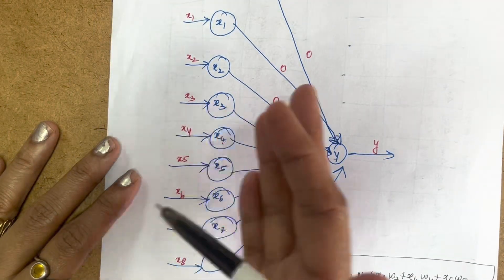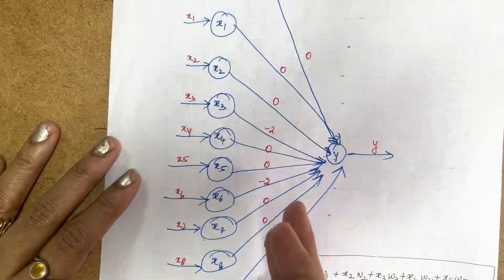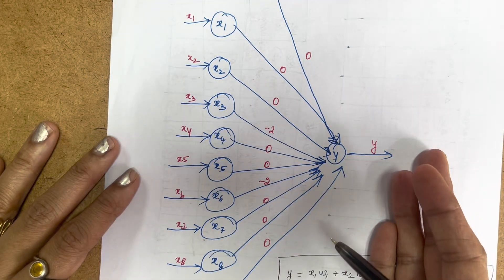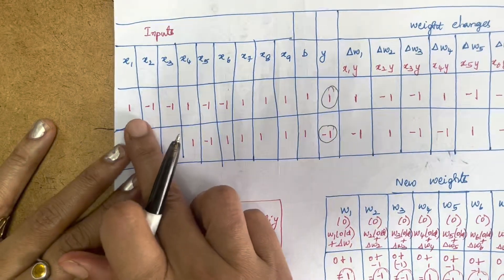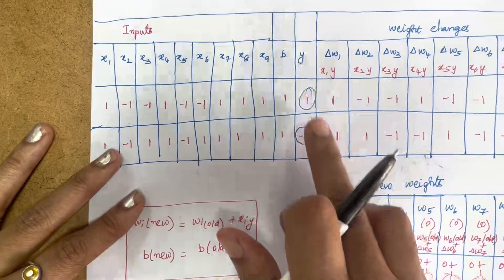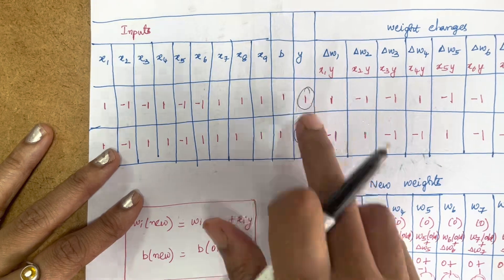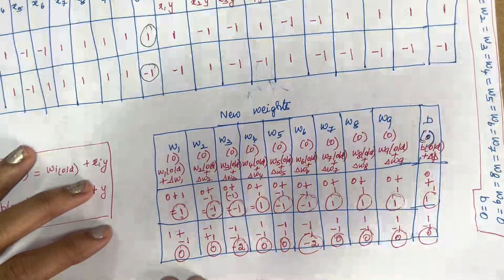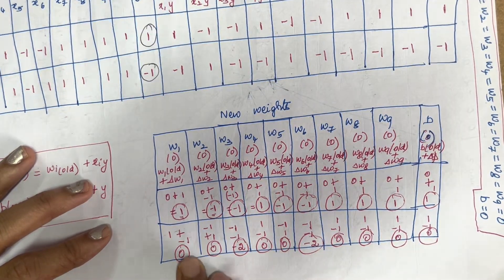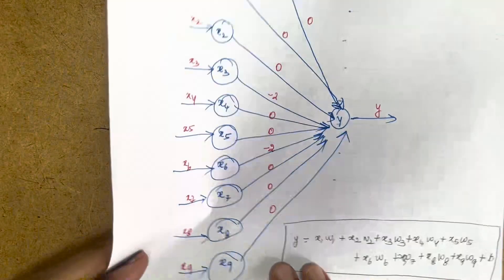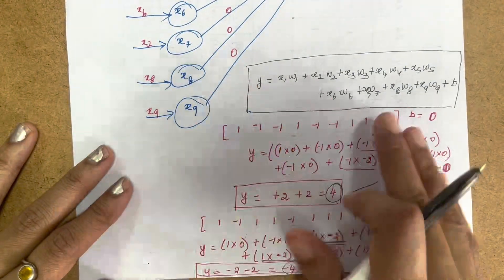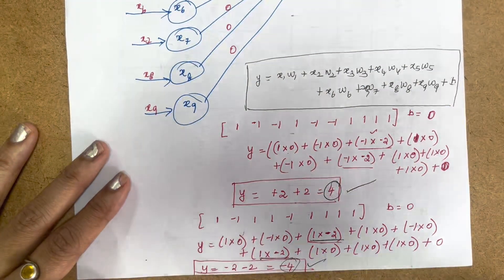This is how you solve a HEP network problem. When an algorithm is given for classification, first write down the inputs in terms of +1 and −1, write the target Y as +1 or −1, find the weight changes, find the new weights, take the final weights after all input pairs are presented, and verify correctness using the formula. Thank you for watching.